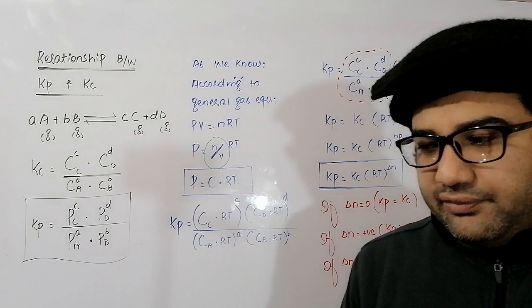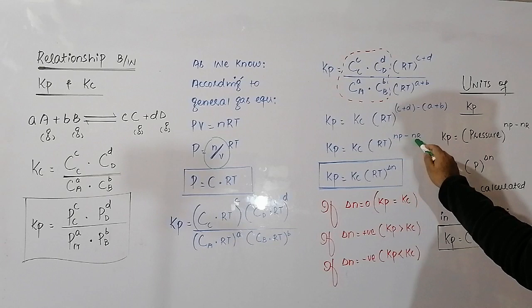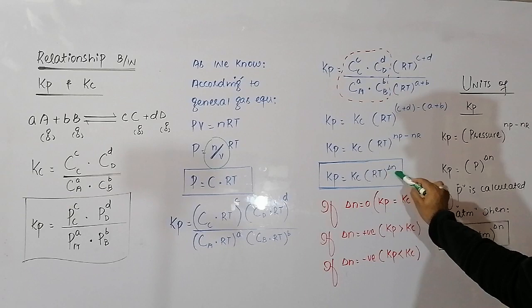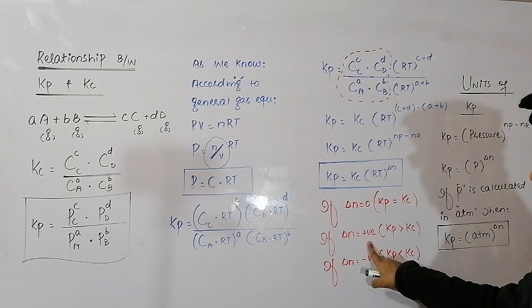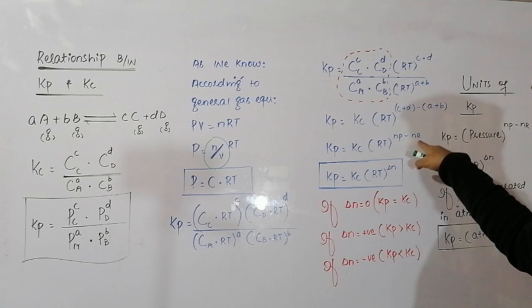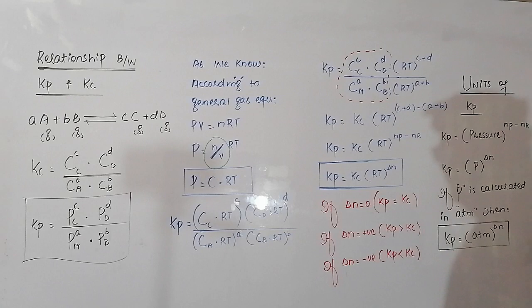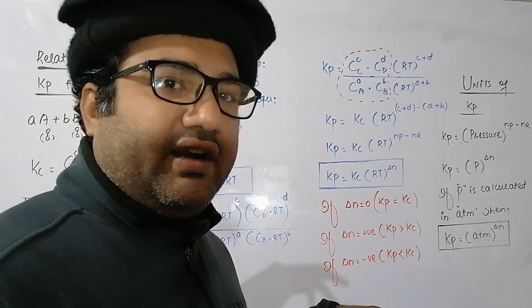It is important to note that the relative magnitude of Kp and Kc depends upon the value of delta N. If the number of moles of products and reactants are the same, then ΔN equals zero, and Kp will be exactly equal to Kc. If the number of moles of products is greater than reactants, ΔN is positive and Kp will be greater than Kc. But if the number of moles of products is less than reactants, ΔN is negative and Kp will be less than Kc. So it depends upon the nature of the reaction.